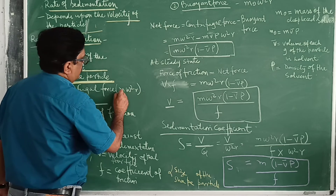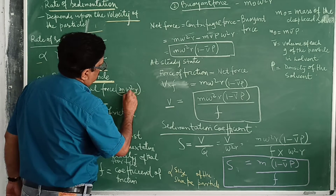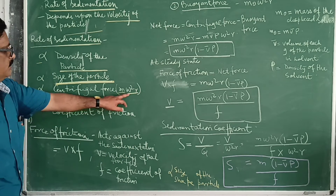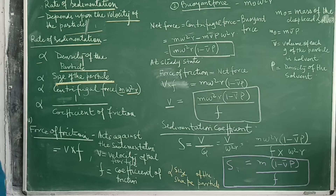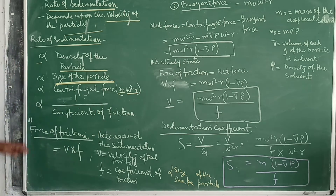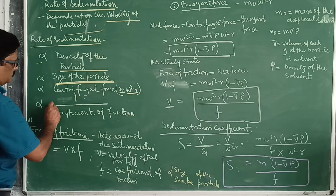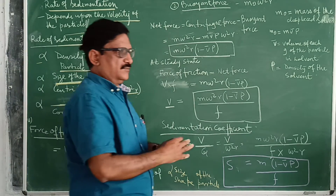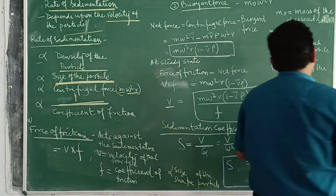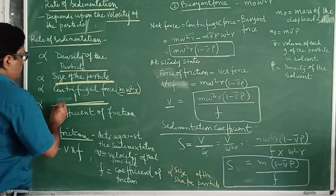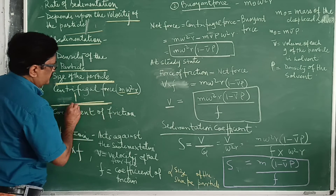The centrifugal force is the product of the mass of the particle and the applied centrifugal field, that is m·ω²·r. However, it is opposed by the coefficient of friction of the medium — the rate of sedimentation is inversely proportional to the frictional coefficient. So the frictional coefficient is a negative term.